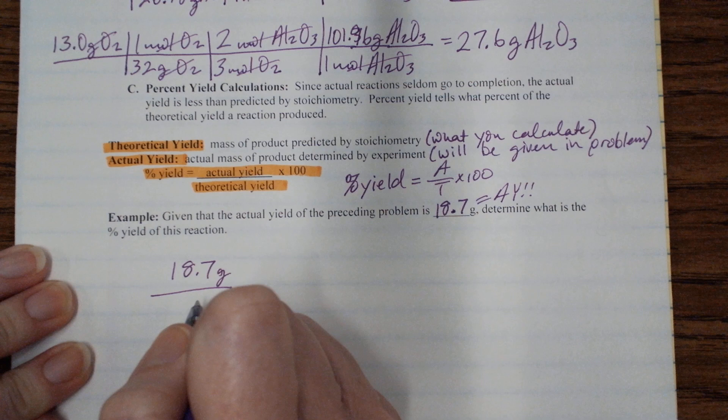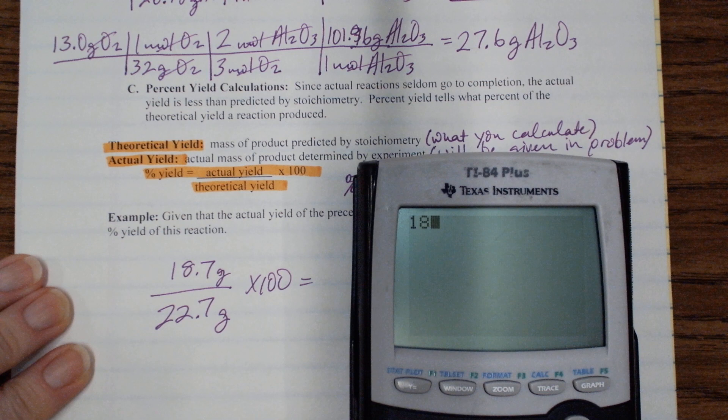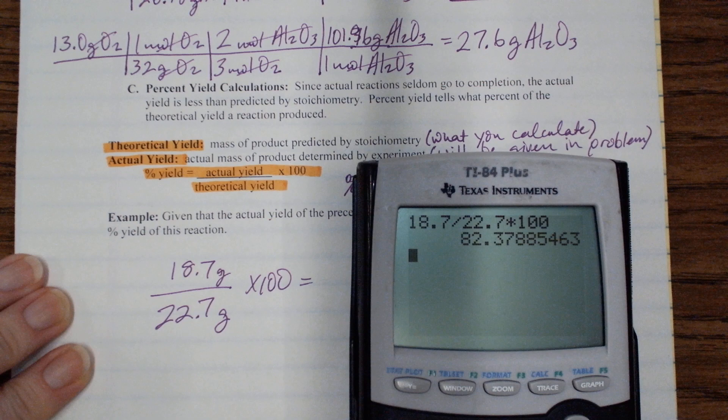So it's going to be 18.7 grams over 22.7 grams times 100. And that's the percent yield. That's literally all you do. So 18.7 divided by 22.7 times 100.